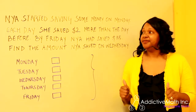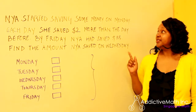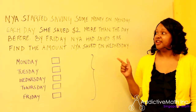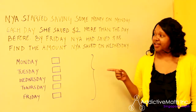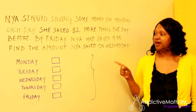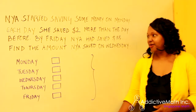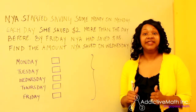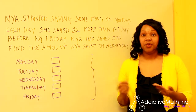So let's get started. Let's read this together. Naya started saving some money on Monday. Each day she saved $2 more than the day before. By Friday, Naya had saved $35. Find the amount Naya saved on Wednesday. I would encourage you to pause the video and see if you can solve this on your own. And if not, stay with me and we'll work through this together.